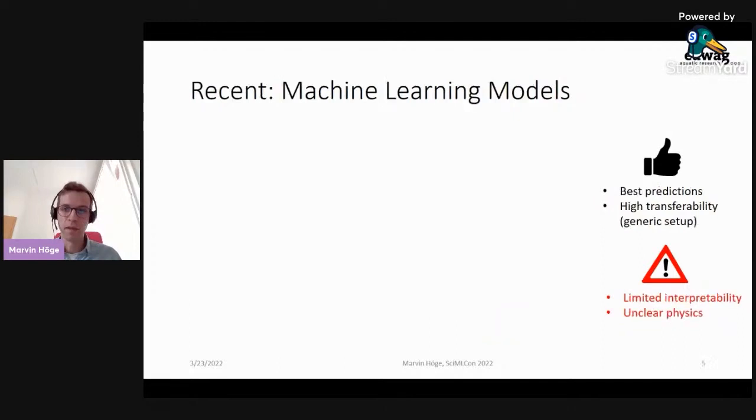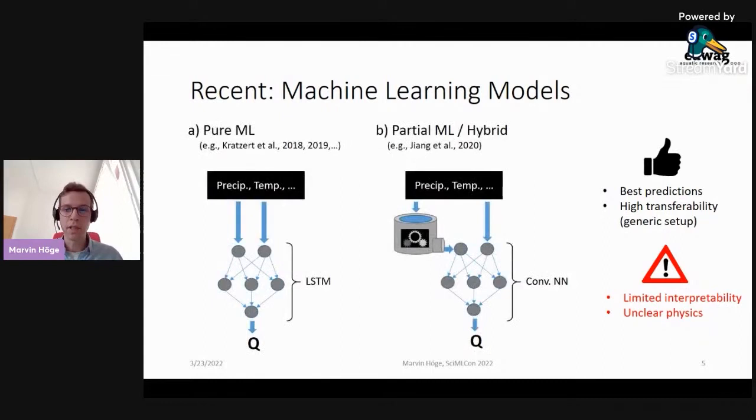Recently, machine learning models became very popular in hydrology, and they have pros and cons opposite to the conceptual hydrologic models. They show highest predictive accuracy and come with transferability between catchments. However, their interpretability is limited, and the representation of physics within the models remains hardly traceable. So the models are either purely machine learning based, like with the long short-term memory LSTM neural network being the approach that has gained most traction in hydrology, or they are hybrid schemes, like the one shown in the center of the slide, where the output of a plain conceptual model serves as additional input to a convolutional neural network aside of the forcings.